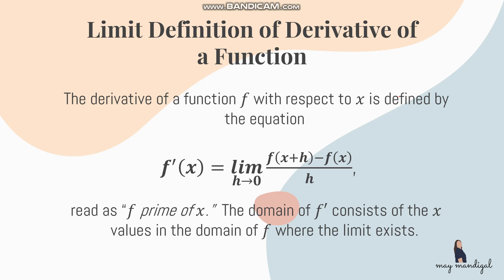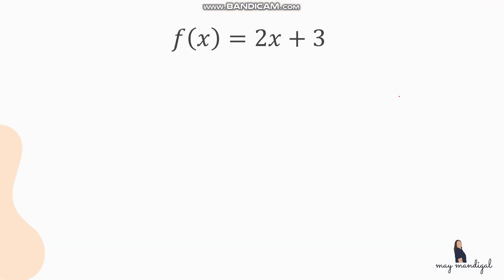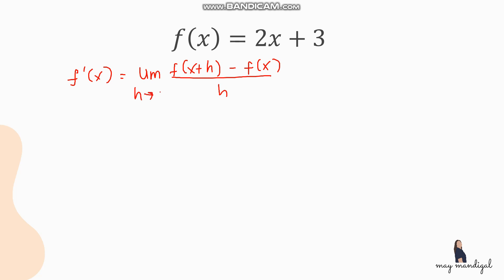If you're asked to solve for the derivative of a function using the limit definition, this is what we will use. Let's start by identifying the derivative of f of x equals 2x plus 3. The formula we're using is f prime of x equals the limit of f of x plus h minus f of x, all over h, as h approaches 0. So we have f of x and we also need f of x plus h.